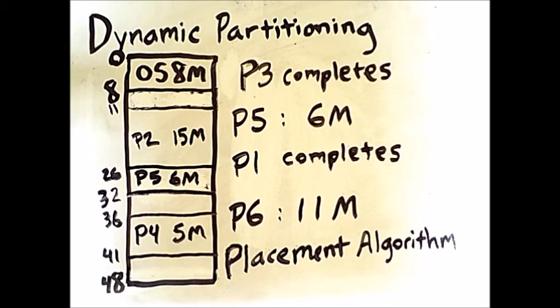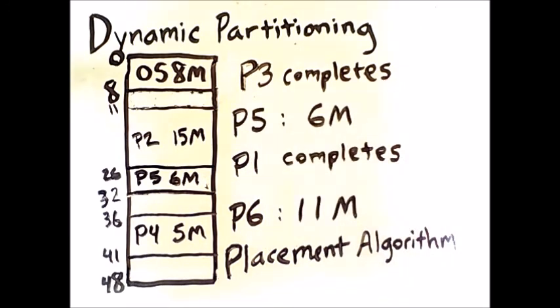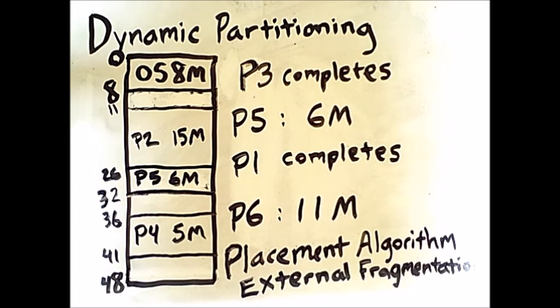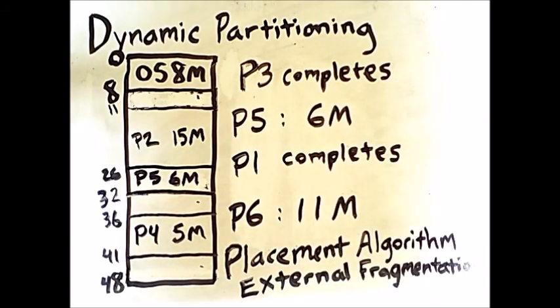Now, we do have 11 megabytes in total across all the empty space on the disk. This is an example of external fragmentation. The fragmentation is external because there are regions of empty space that are external to all predefined partitions. However, this empty space can't be effectively used because it is not contiguous. It is fragmented.